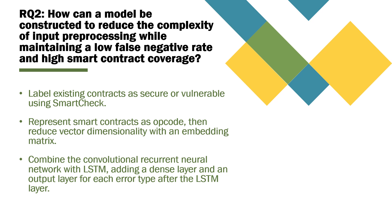Finally, we would like to combine the convolutional recurrent neural network technique with long short-term memory, adding a dense layer and an output layer at the end for every error type after the long short-term memory layer. Since this proposed model uses the opcode vectorization of the entire source code, we eliminate the need to obtain the crucial operating sequence, which would have added to preprocessing time, and we also ensure we are obtaining full smart contract coverage with our model.